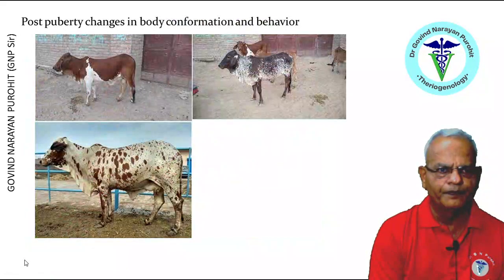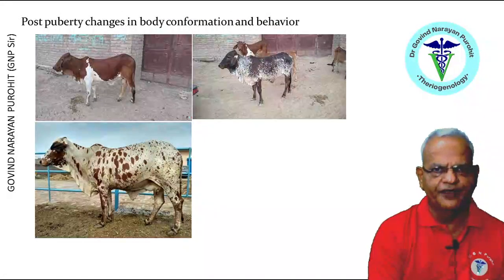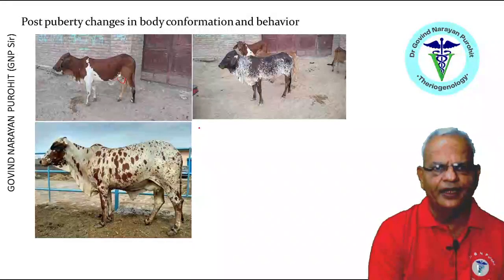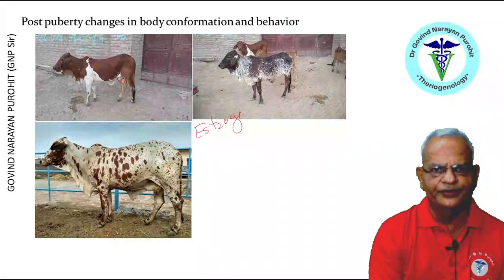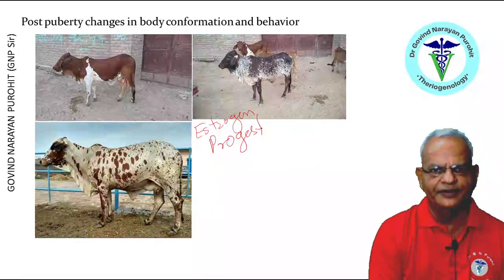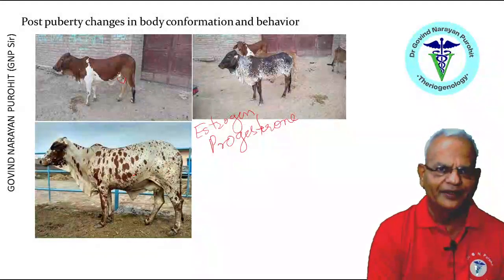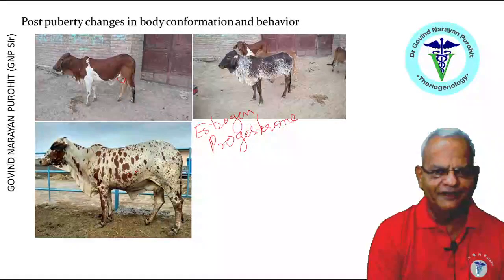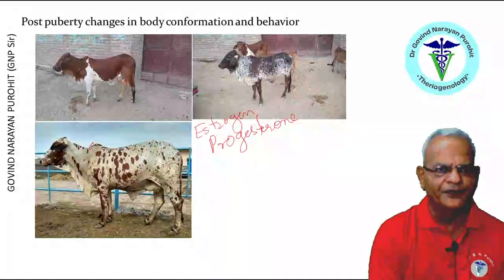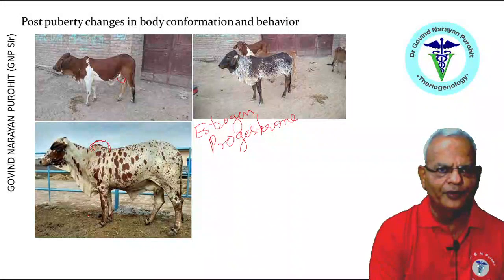There are some behavioral changes after puberty in heifers. Some heifers may develop small udders, because of the hormonal changes — estrogen and progesterone — and sometimes people may be confused that the heifer is pregnant. However, the development of an udder in the heifer is not indicative that it is pregnant. In male animals, there will be development of a prominent hump and a coarse voice.